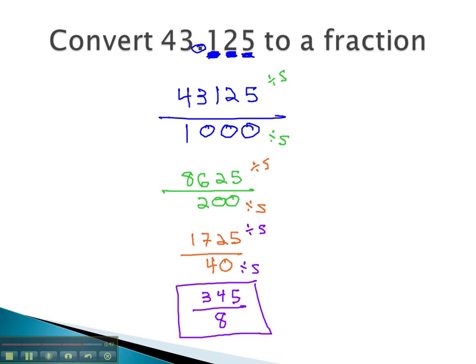We can quickly convert these decimals to a fraction by putting the number without the decimal in the numerator, and counting the number of decimal digits to tell us the number of zeros we need after the 1 in the denominator. And as always, be sure to reduce.